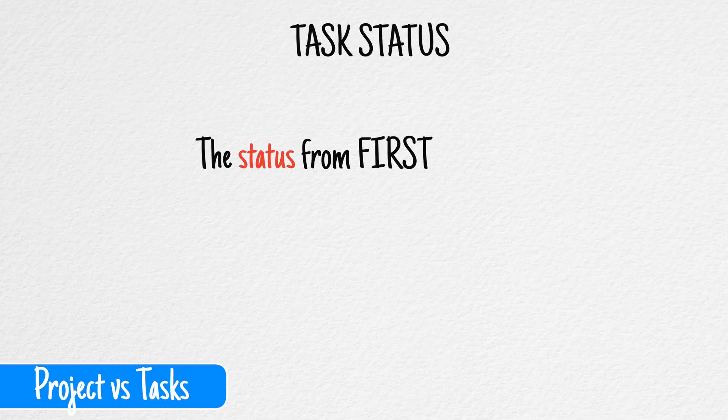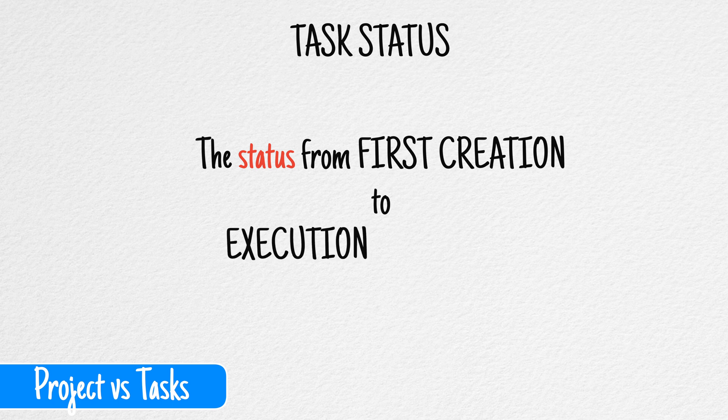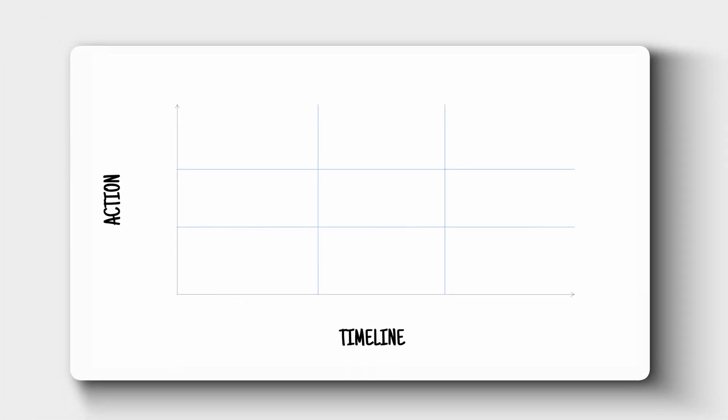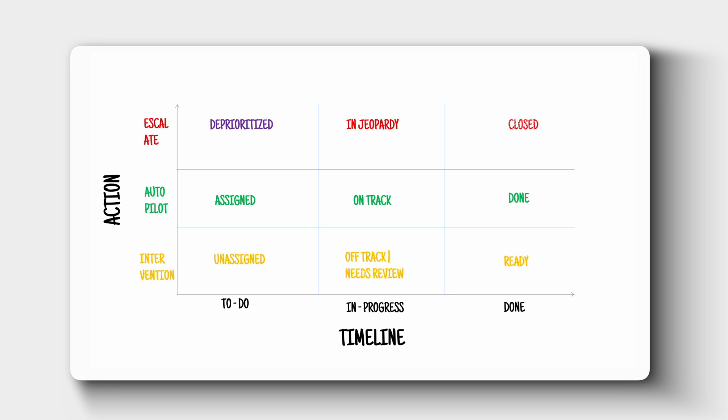Before we get down to what's new, you need to be aware of the difference between a task status and the project status while managing projects. Notion defined the default settings for task status in terms of the timeline for completion. On the basis of goal standards for project management, you can further break these down into nine different options grouped under three categories.